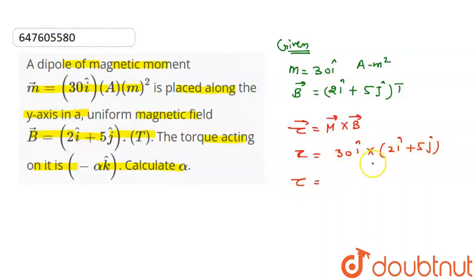So we have 30i. Now i cross i equals 0, and 30 times 5 equals 150. This gives us 150 j cap. Actually, i cross j gives us 150 k cap.